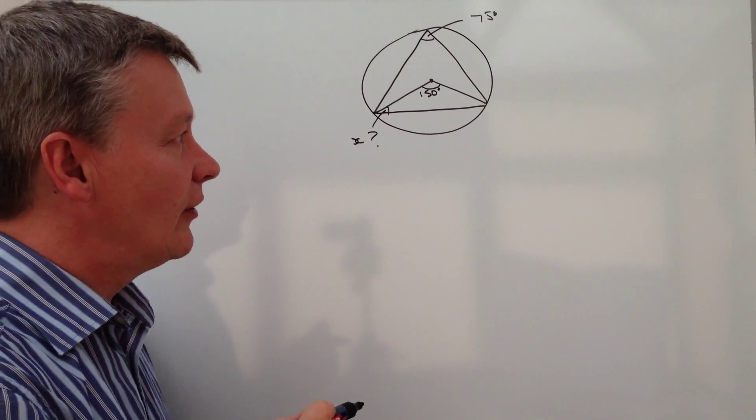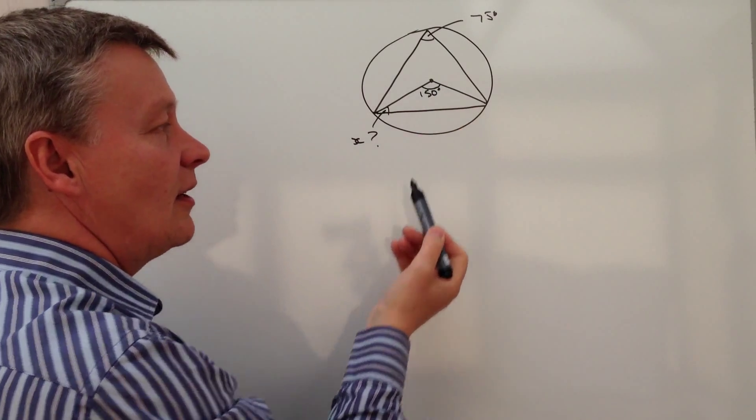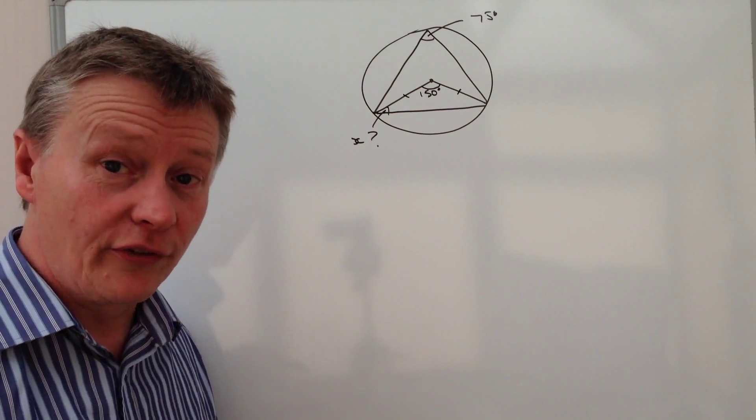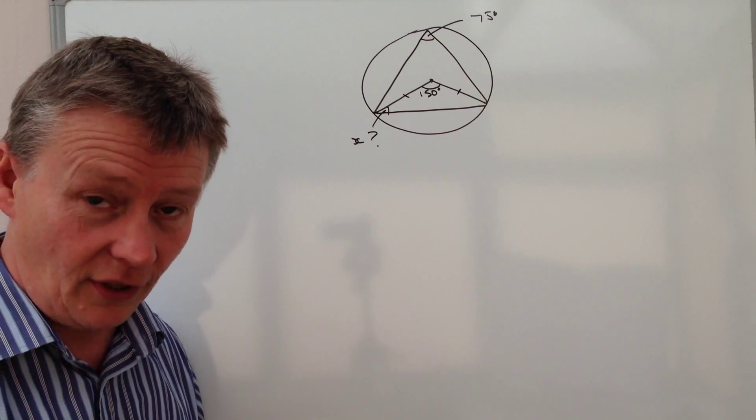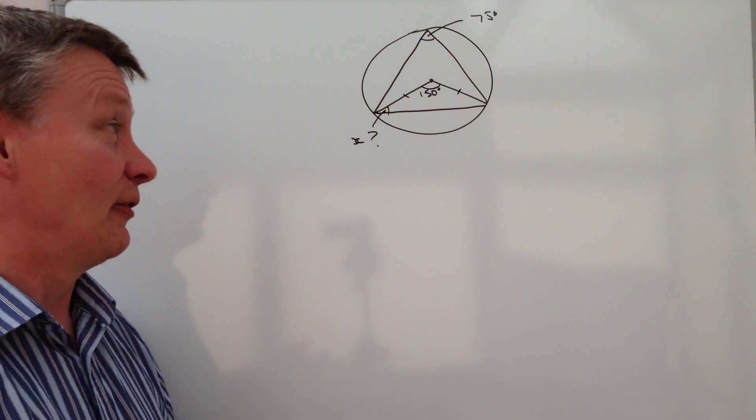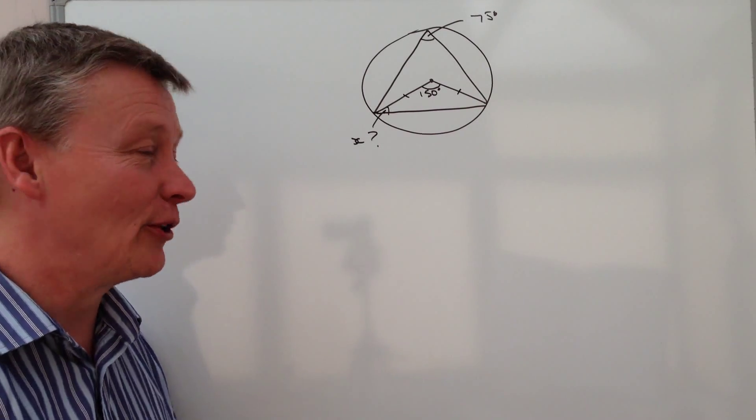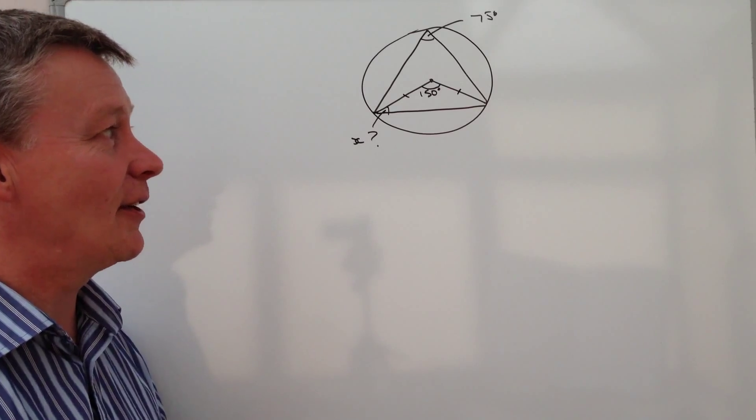The other thing that we know is that this is the center of the circle, so that this line and this line are both the radius of the circle, and they're also equal.